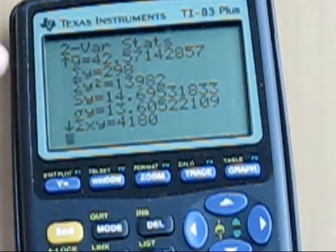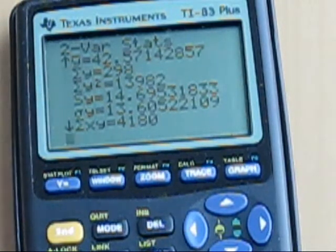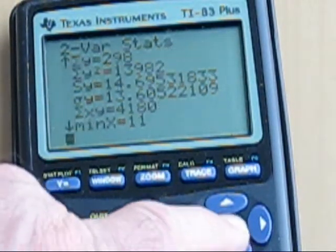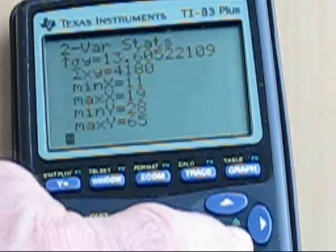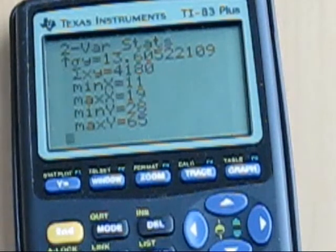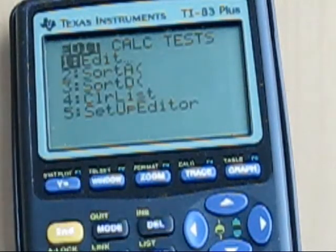Now notice as I scroll down I get the y scores at the very top here. I see the mean of the y scores, now that's list two. The sum of the y, the sum of the squared y's, the standard deviations also here. Get the sum of x y, that's the cross products. I get the usual stats, the minimum x, the minimum y's, and that gives me all my descriptive stats for the two variables.